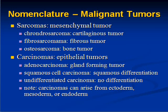Malignant tumors derived from mesoderm or mesenchymal tissue are generally in the family of sarcomas. A chondrosarcoma is a malignant tumor of cartilaginous tissue. A fibrosarcoma is a malignant tumor of fibrous tissue. An osteosarcoma is a malignant tumor of bone tissue. A liposarcoma is a malignant tumor of fat connective tissue. Pretty much the same nomenclature as the benign counterparts, only with 'sarc' in there.